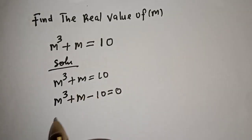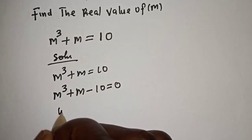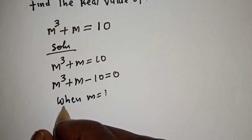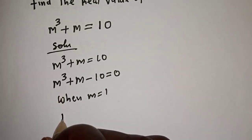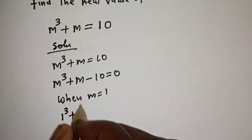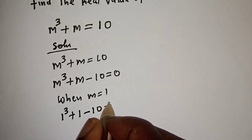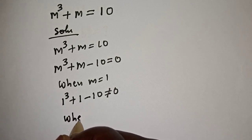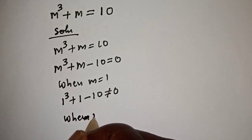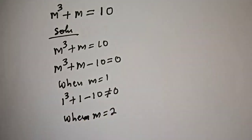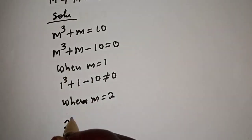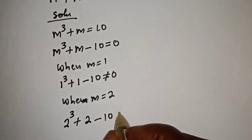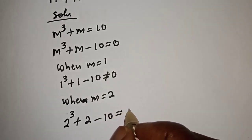First, let's check the factor. When m is equal to 1, m raised to the power 3 is 1 raised to the power 3 plus 1 minus 10. This is not equal to 0. Now, let's consider when m is equal to 2. So, m raised to the power 3 is 2 raised to the power 3 plus 2 minus 10 is equal to 0.